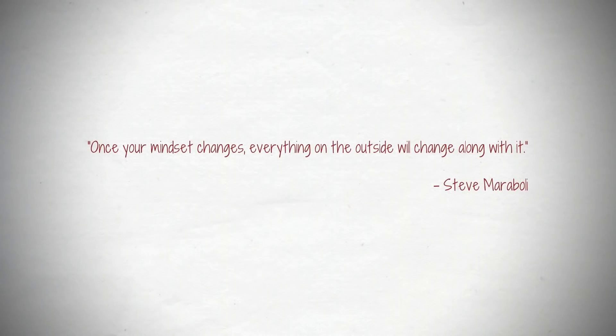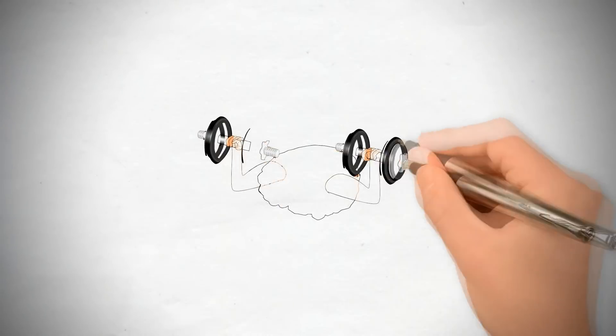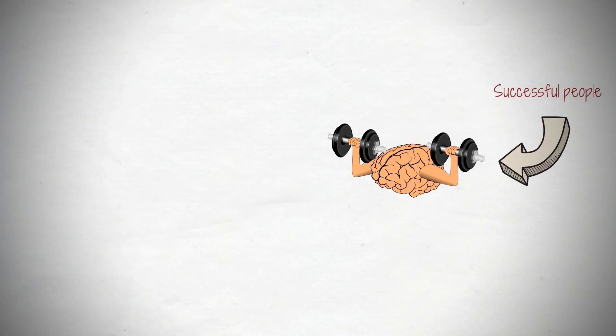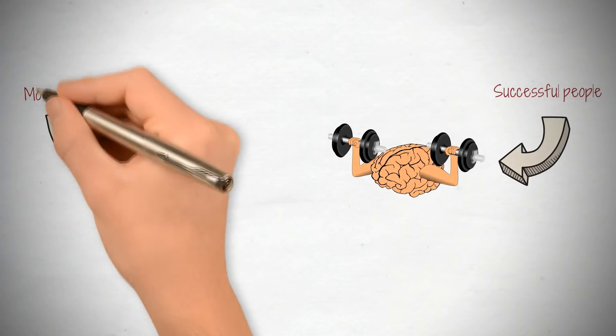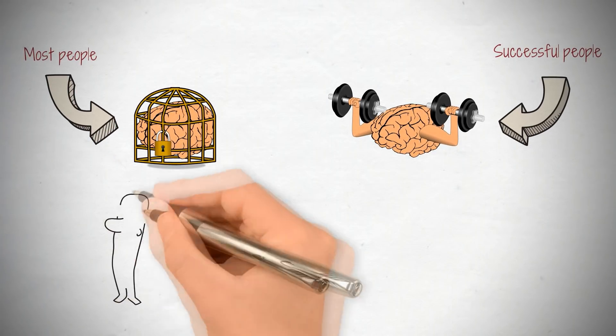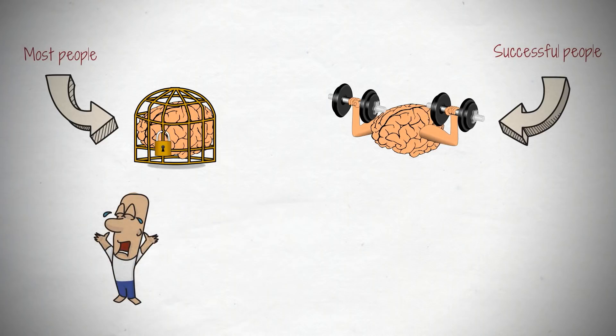There are three big mindsets that nearly all highly successful people adopt over the course of their lives. All three of these mindsets are counter-intuitive and completely different from the way that most people think. The last one in particular is rare because it goes directly against the basic tendencies of the human ego. In this video, I'll explain what these mindsets are, how successful people think about them, and how to utilize them in practical situations.